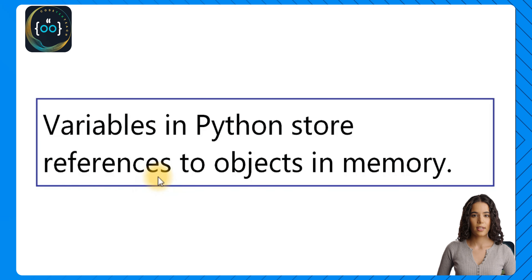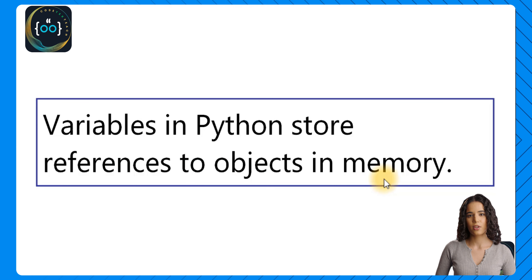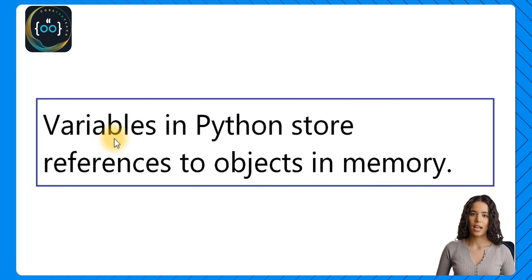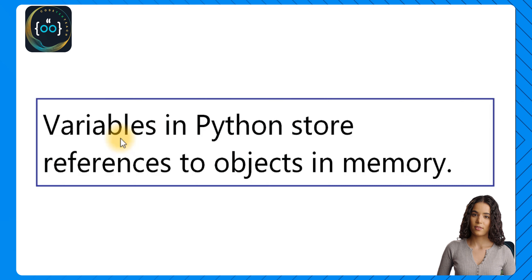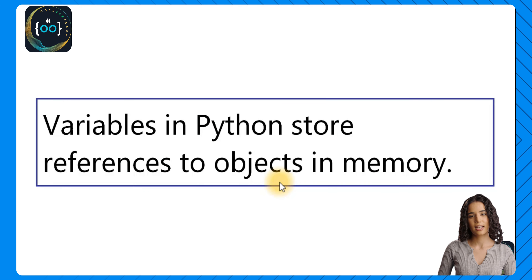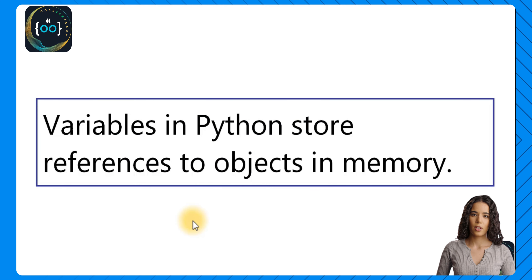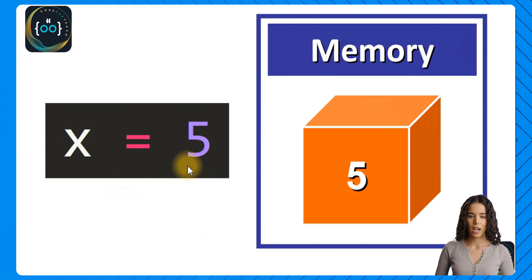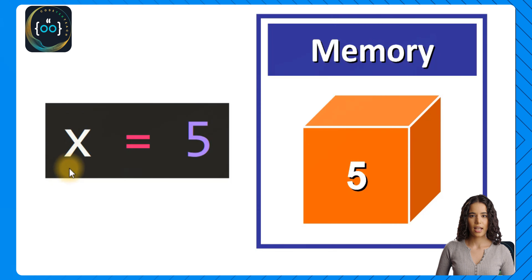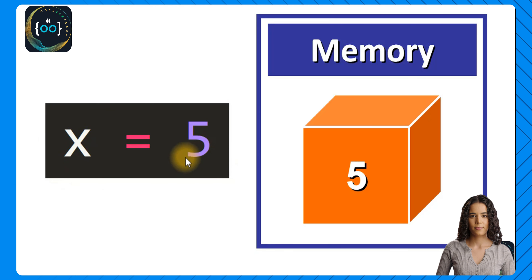Variables in Python store references to the objects in memory. This is very important because sometimes we might think that when we assign a value or an object to a variable, that variable holds the object. But this is not the case in Python — variables store references to the objects. The object is stored somewhere in memory and the variable knows where to get that object from memory because it has a reference to that object.